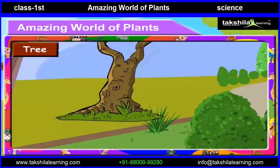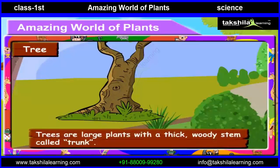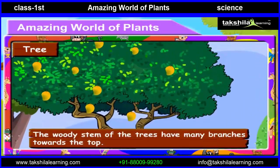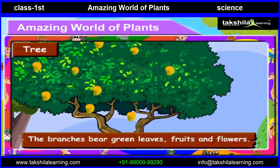Let us see what are trees. Trees are large plants with a thick woody stem called trunk. The woody stem of the trees have many branches towards the top. The branches bear green leaves, fruits and flowers.